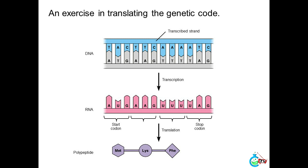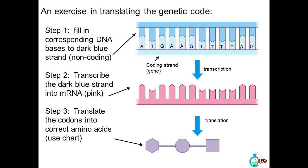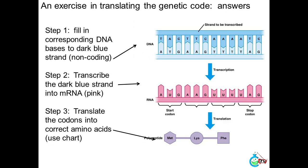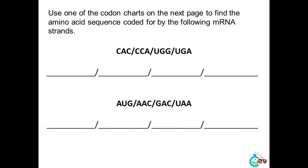An exercise in translating the genetic code: Step 1 — Fill in corresponding DNA bases to the dark blue strand (non-coding). Step 2 — Transcribe the dark blue strand into mRNA. Step 3 — Translate the codons into correct amino acids using the codon chart. Use the codon chart to find the amino acid sequence coded for by the given mRNA strands.